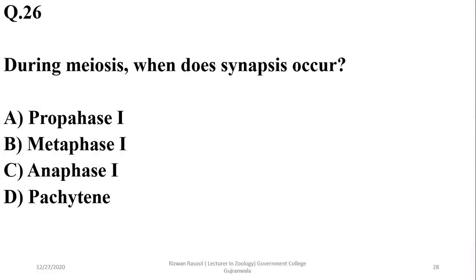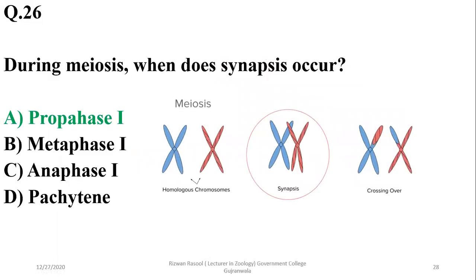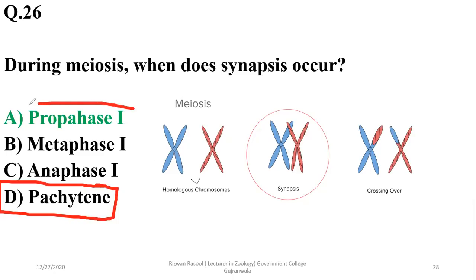Question 25: During meiosis, when does synapsis occur? Synapsis actually happens in the zygotene phase, and in the pachytene stage the chiasmata will be crossing and synapsis will be complete. So prophase I is preferred as the answer, because synapsis starts in zygotene. It will be complete in pachytene. Overall, prophase I is the better option, though pachytene is also acceptable.